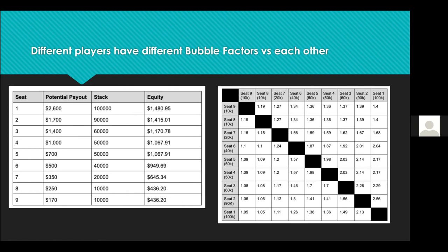It's important to realize that different players have different bubble factors against each other. With nine players left having stacks from 100,000 down to 10,000, you can calculate a grid of bubble factors. For example, seat nine with 10,000 chips has a bubble factor of 1.19 when playing against seat eight, but a bubble factor of 1.40 against the chip leader. When you're the short stack, the more chips your opponent has, the higher your bubble factor — and the more equity you need to break even getting it all-in.